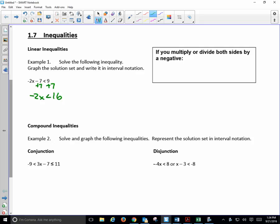We add 7 to both sides. Now what do I do? I divide by a negative 2, and I get x is greater than negative 8. So what we learned is that if you multiply or divide both sides by a negative, what must you do? Flip the sign, okay?